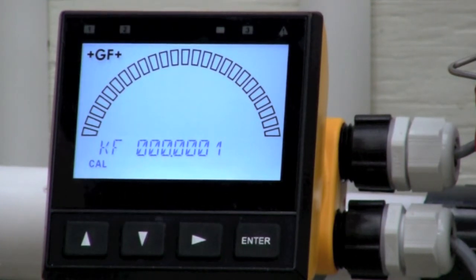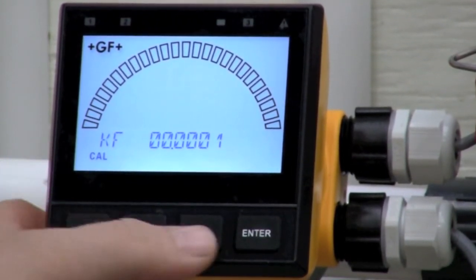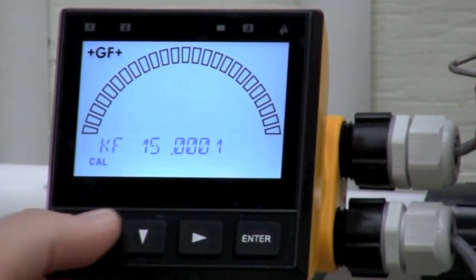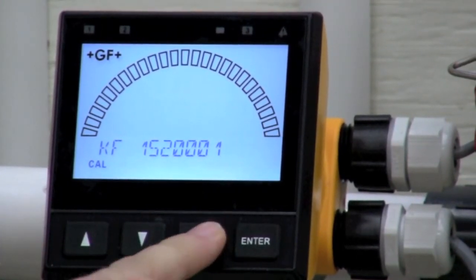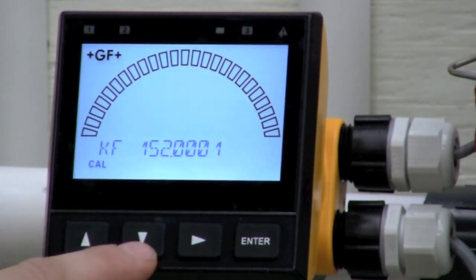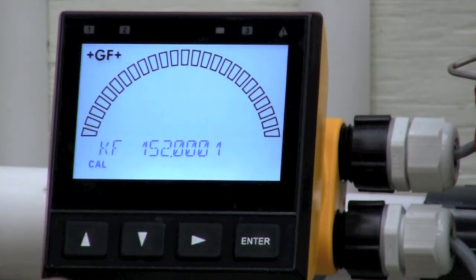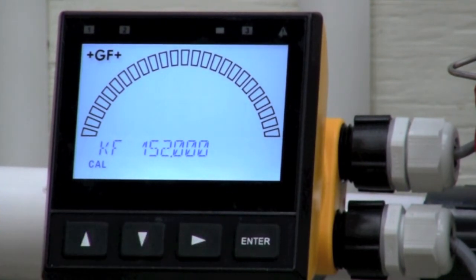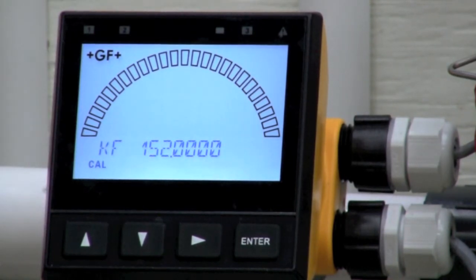The K-factor I'm looking for is 152. I'm going to use the up and down arrows to get me 1, 5, 2. If you overshoot, just hit the down arrow. When you're doing this, take note of your decimal. Right now, I have the decimal selected. I can move this decimal to anywhere I want. This is indeed the correct spot. Now that I have my K-factor entered in, I hit enter. It tells me saving. There we go. We have the K-factor set in.